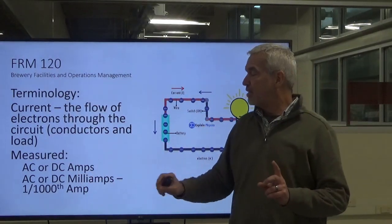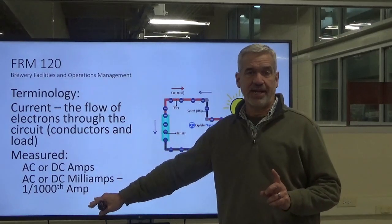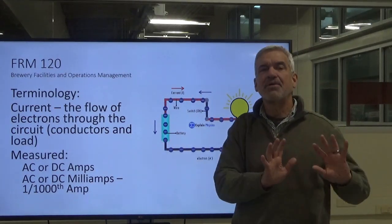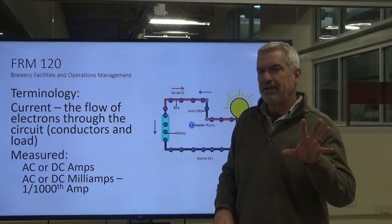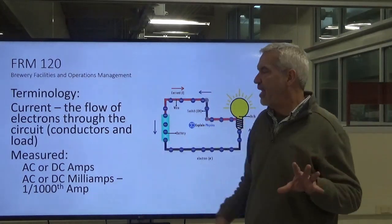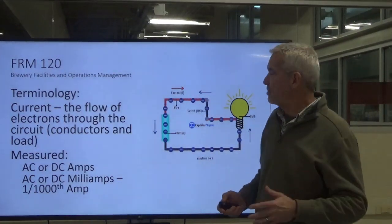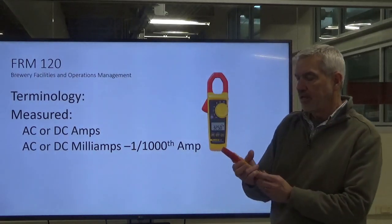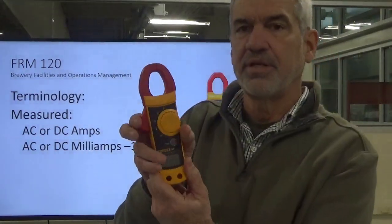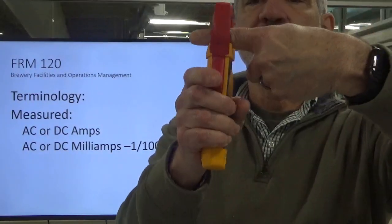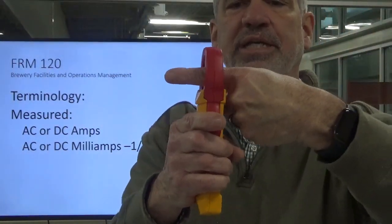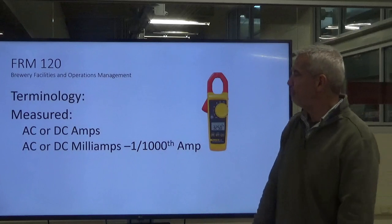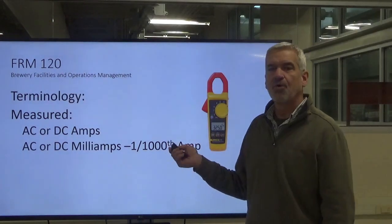We also measure current in milliamps, which is a thousandths of an amp. We use this a lot in control circuits, particularly a range of 4 to 20 milliamps — and that's way deeper than I want to get into right now; we'll talk about that when we get into controls. But just know that current is also measured in milliamps. And we typically use an amp clamp — this is an amp clamp, also a Fluke. It opens up so that you can clamp it onto a wire, and you'll measure the current going through that wire.